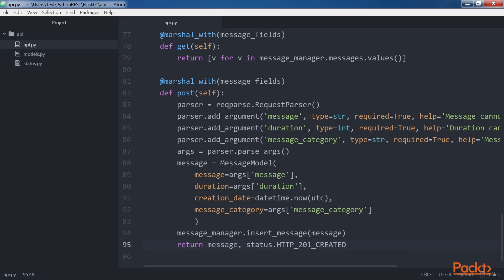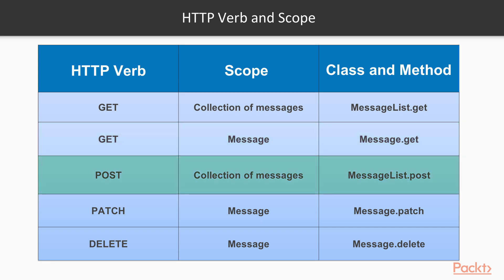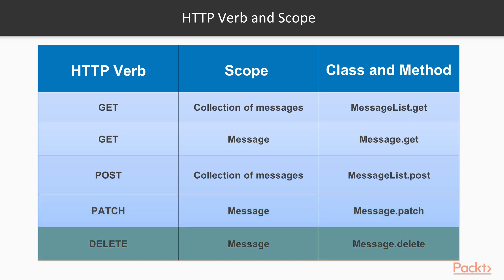Save the file to keep the changes. Now we will see the table that shows the method of our previously created classes to be executed for each combination of HTTP verb and scope: GET collection of messages → MessageList.get; GET message → Message.get; POST collection of messages → MessageList.post; PATCH message → Message.patch; DELETE message → Message.delete. If the request results in the invocation of a resource with an unsupported HTTP method, Flask-RESTful will return a response with the HTTP 405 Method Not Allowed status code.